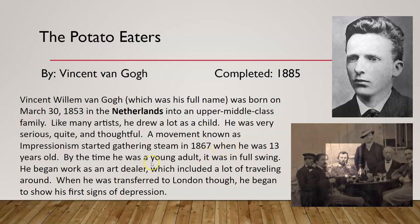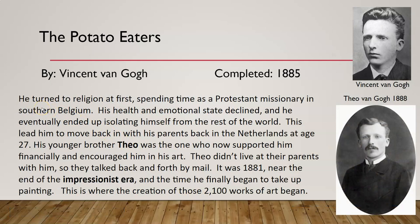He wasn't involved in Impressionism at that point, but it would end up affecting him as he started getting into artwork as that era was starting to die down. By the time he was a young adult, Impressionism was in full swing. He began work as an art dealer, which included a lot of traveling around. When he was transferred to London, he began to show his first signs of depression. He turned to religion at first for help, spending time as a Protestant missionary in southern Belgium. His health and emotional state declined, and he eventually ended up isolating himself, which led him to move back in with his parents in the Netherlands at age 27. His younger brother Theo was the one who supported him financially and encouraged him in his art.